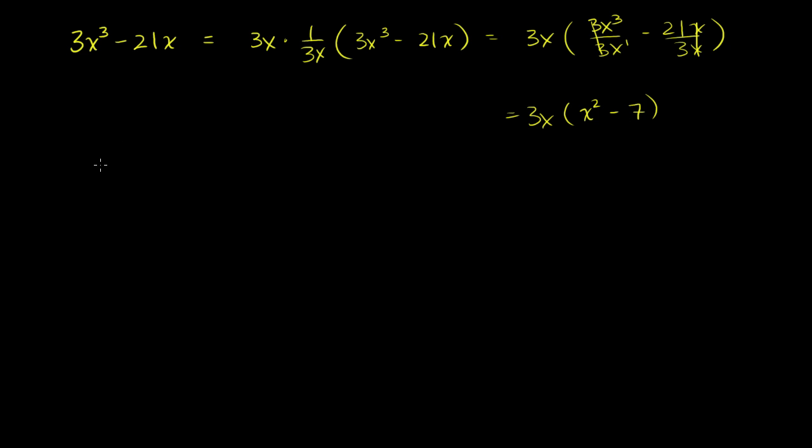Let's do another one. Let's say we had 4x to the third plus 10x squared minus 2x. So when I look at this, immediately what pops out is that all of these terms are divisible by 2 and all of them are divisible by x. So let me factor out a 2x. So this is equal to 2x times, and when we factor out a 2x, let's divide each of these terms by 2x. 4x third divided by 2x. 4 divided by 2 is 2. And then x third divided by x is x squared. And then we have plus 10x squared divided by 2x. 10 divided by 2 is 5. x squared divided by x is x. And then finally, negative 2x divided by 2x is just negative 1.